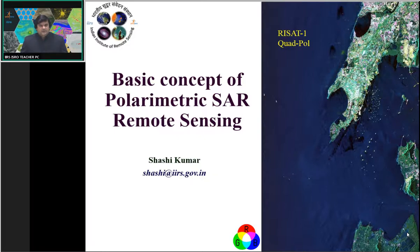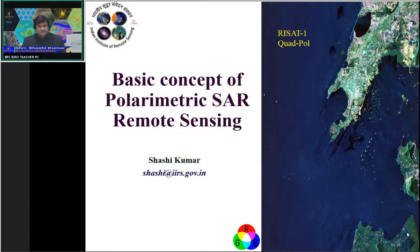Good evening. Welcome to the third lecture of this course. Today's lecture will be on the basic concepts of polarimetric SAR remote sensing. We are going to explore the potential of polarimetric remote sensing. Before exploring the potential, we will discuss the requirement of polarimetric datasets. Here in the front slide, you can see a polarimetric decomposition-based false color composite image of RISAT-1 data. RISAT-1 provided quad-pole data, and this is data over the Mumbai area. The false color composite image was generated by extracting the scattering information, where blue color represents surface scattering, green represents volume scattering, and red represents double bounce scattering.